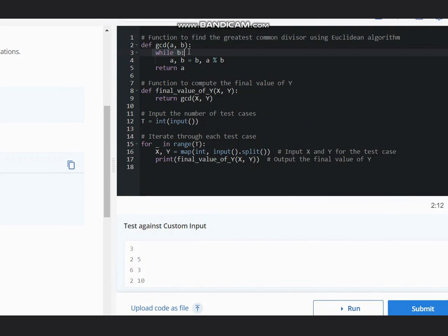While B exists, we are generating A, B. So our X is updated to Y, and Y is updated to X modulus Y. And we simply return X. Why are we returning X? Because at last, X will be holding the value of Y.